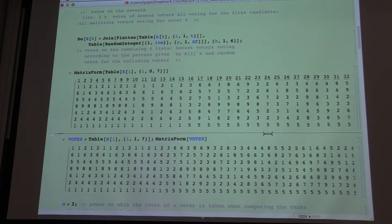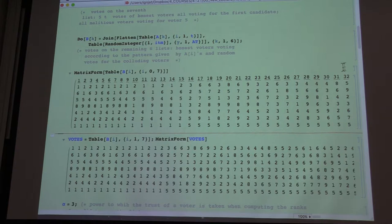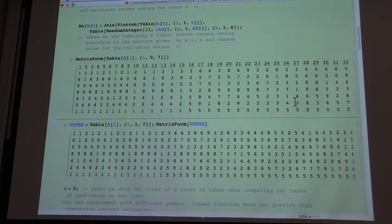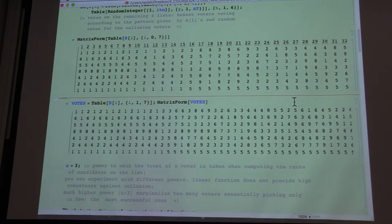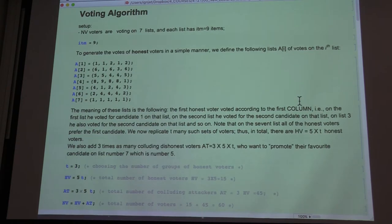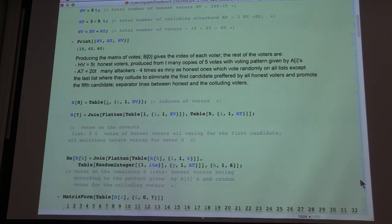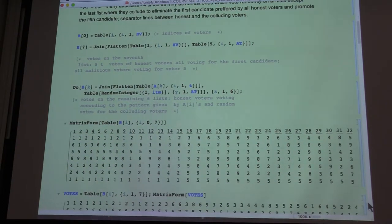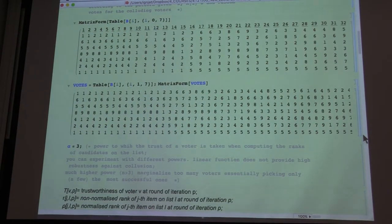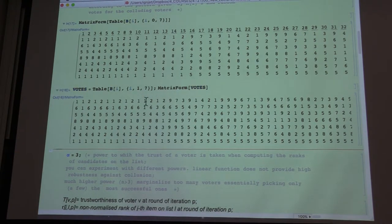But they are not terribly interested in outcomes of voting on other lists, so they vote randomly on all other lists. So we will aggregate all the votes in a single table.